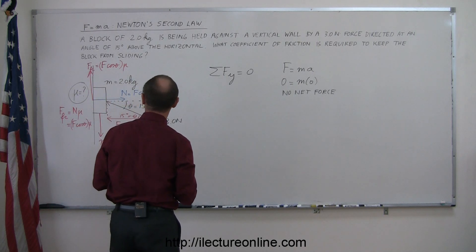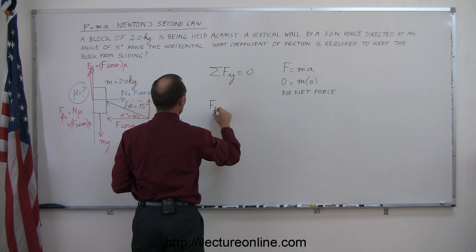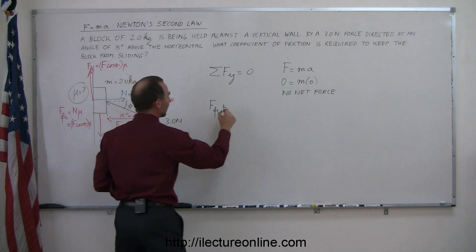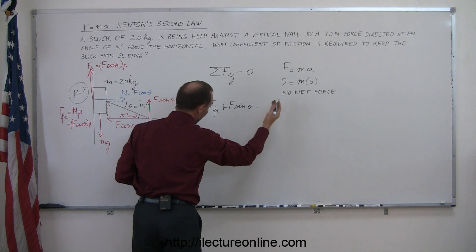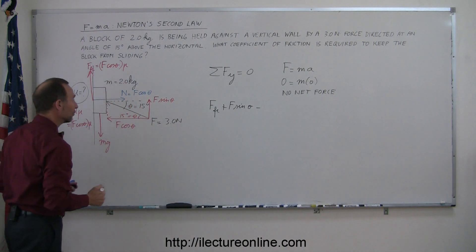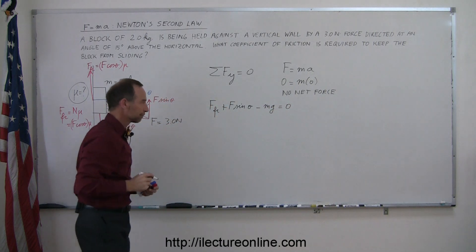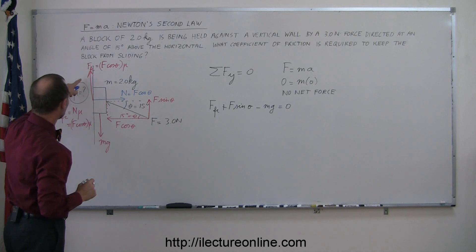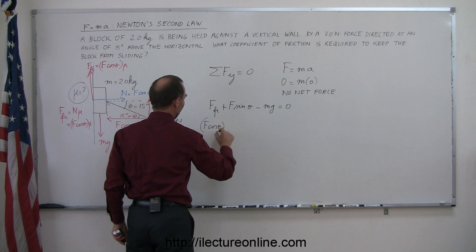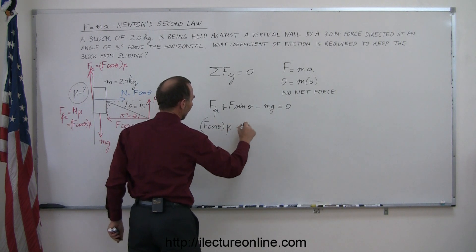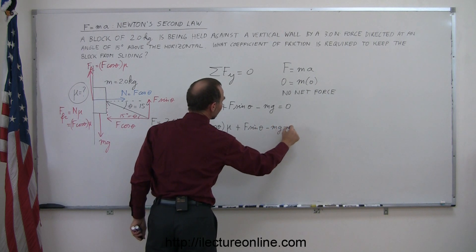Let's add them all up. We have the positive friction force, plus the positive force f sine theta, minus mg, and that should all add up to zero. Writing this out: f cosine theta times mu, plus f times sine of theta, minus mg, equals zero.